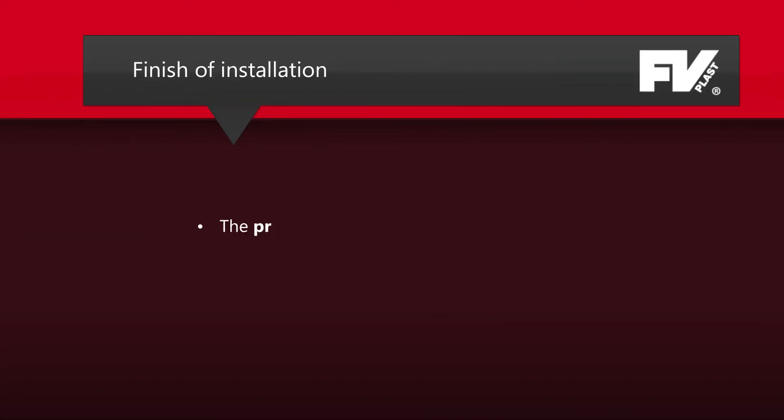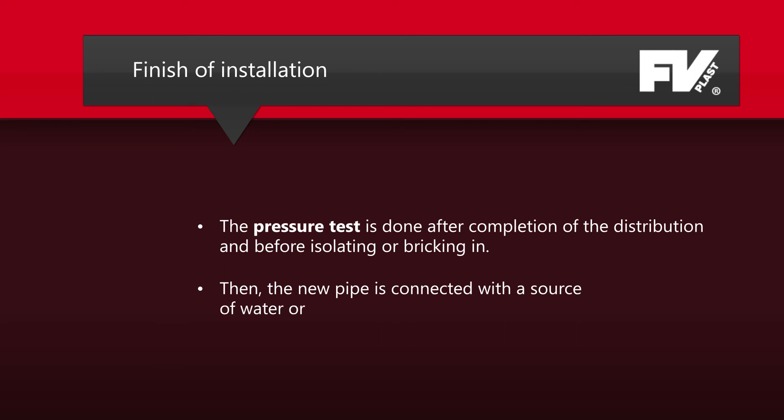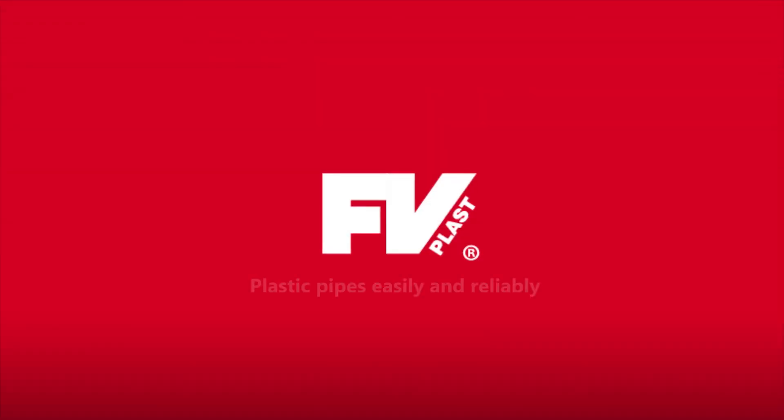After completion of the distribution and before isolating, bricking up or covering, a pressure test is performed. After a successful pressure test we only have to connect the new pipeline with a source of water or heating system. Therefore it has been possible to build plastic distribution pipes with FV Plast easily and reliably since 1990.